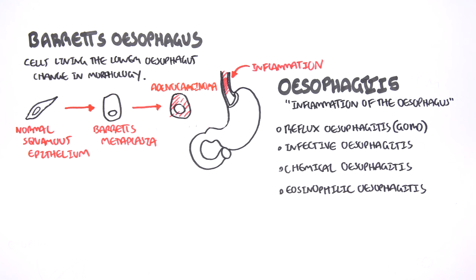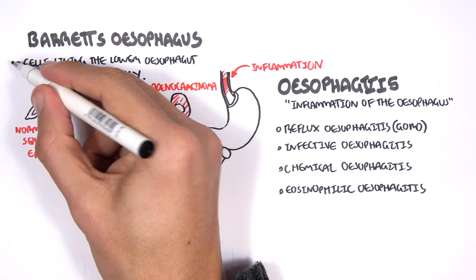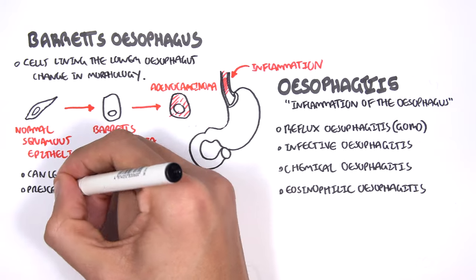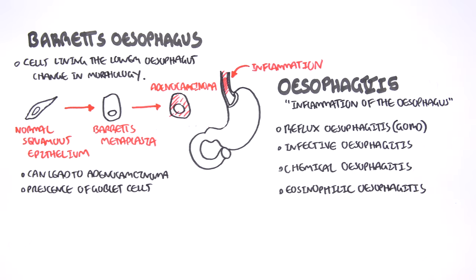The relevance of Barrett's esophagus is that this change in morphology can lead to adenocarcinoma. Also, pathological findings reveal that there are goblet cells present in the area where they shouldn't be.